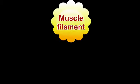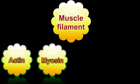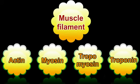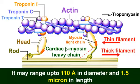A muscle filament consists of actin, myosin, tropomyosin and troponin. The A band contains a set of thick filaments formed of the contractile protein myosin. These may range up to 110 angstrom in diameter and 1.5 micron in length.